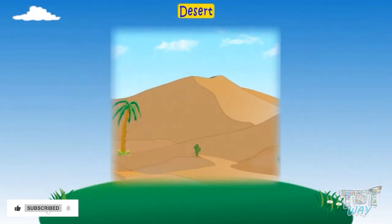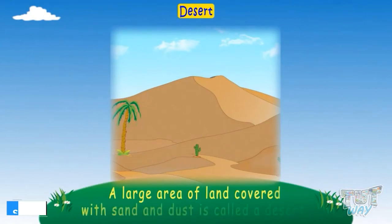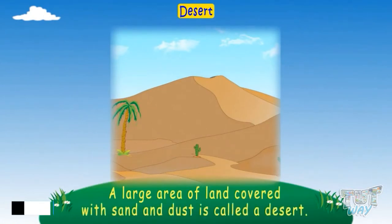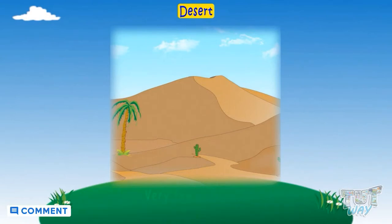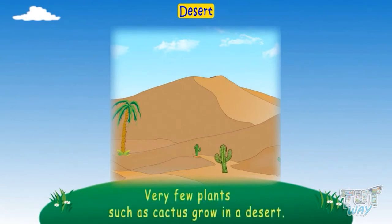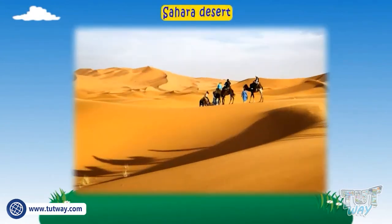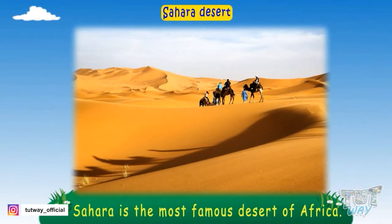A large area of land covered with sand and dust is called a desert. Very few plants, such as cactus, grow in a desert. The Sahara Desert is the most famous desert of Africa.